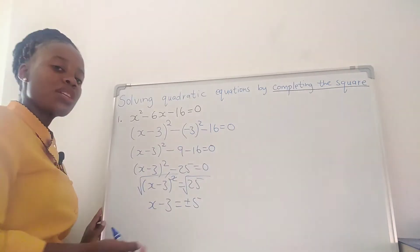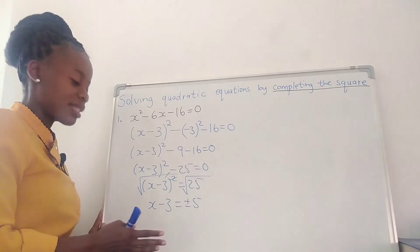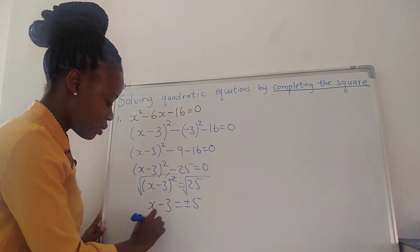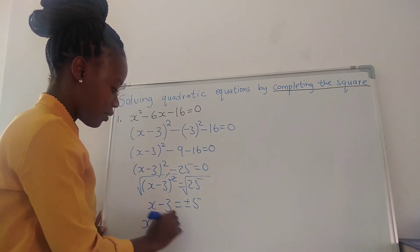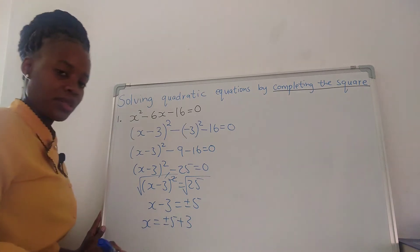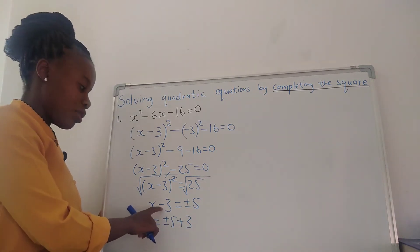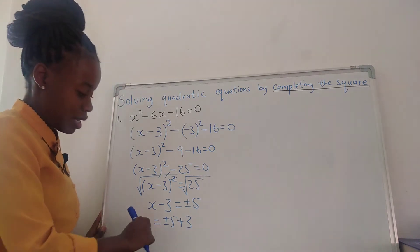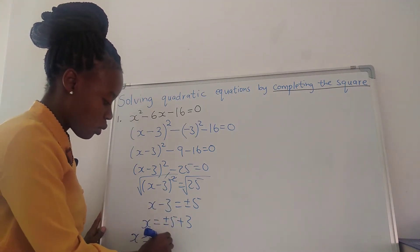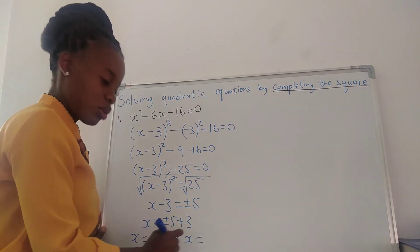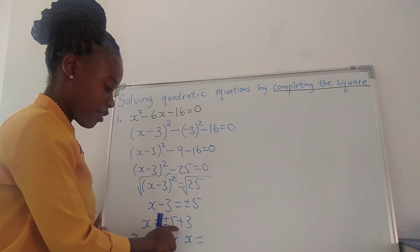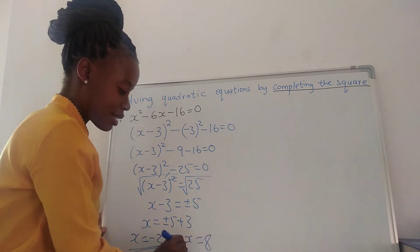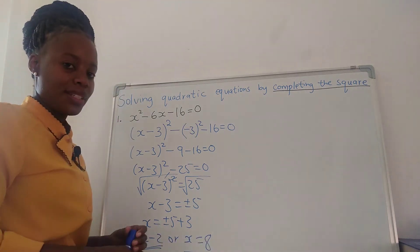Now we just want our x to be left alone. We make x the subject. We're going to take negative 3 to the other side, so x is equal to plus or minus 5 plus 3. It was negative; when it goes to the other side, it becomes positive. So our first x is negative 5 plus 3, which is negative 2. Or x equals positive 5 plus 3, which is 8. So x equals negative 2 and x equals 8.